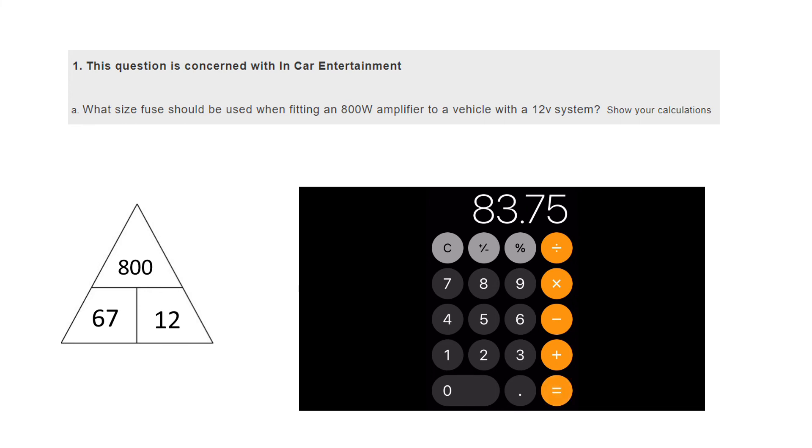And when you add that on, it comes to 83.75 amps. That's the tolerance we need. We need a fuse that's rated to around about 80 odd amps.